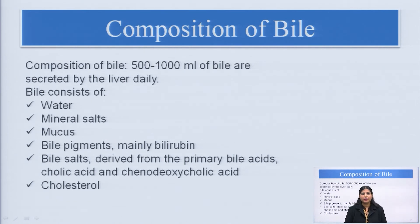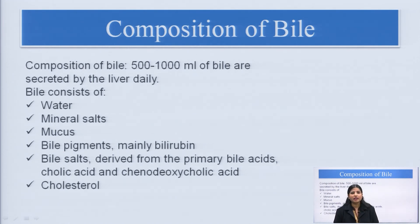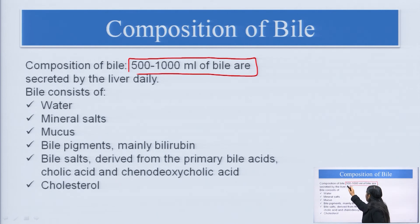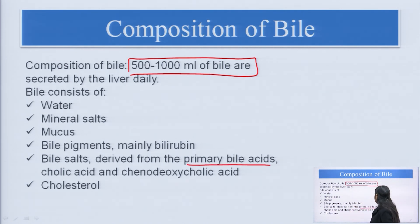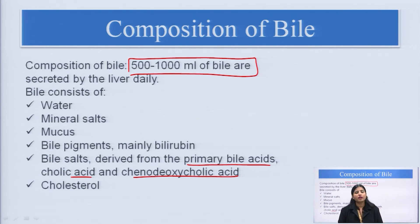Composition of bile: bile is produced by the liver — nearly 500 to 1000 ml daily. It consists of water, mineral salts, mucus, bile pigments mainly containing bilirubin, and bile salts which emulsify fats. Bile salts are formed from primary bile acids: cholic acid and chenodeoxycholic acid, which are precursors forming the bile salts. Cholesterol is also present. All these components are stored in the gallbladder.